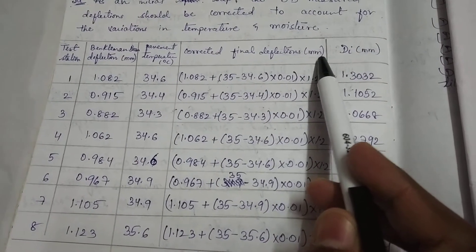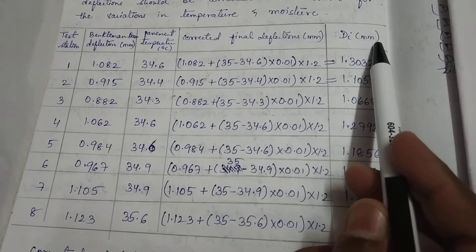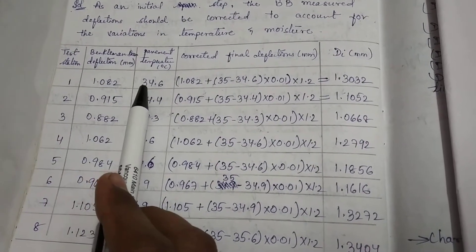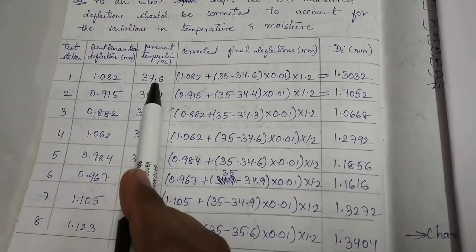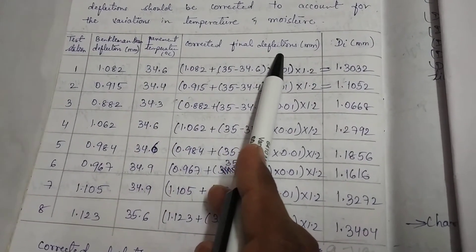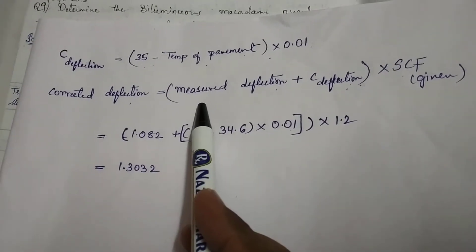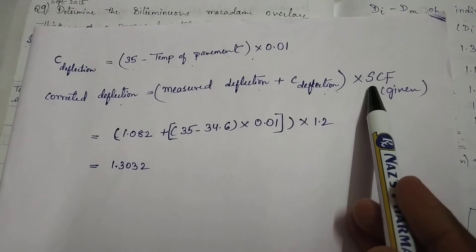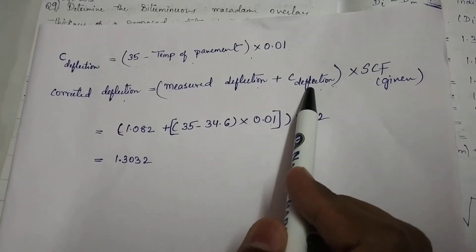We have to find corrected final deflections Di in mm, where Di is individual deflections corrected for temperature and seasonal variations. For the first test station, the Benkelman Beam deflection is 1.082 mm and temperature is 34.6 degrees. The corrected deflection formula is: measured deflection plus C deflection multiplied by SCF, where SCF is the seasonal correction factor provided in the question.